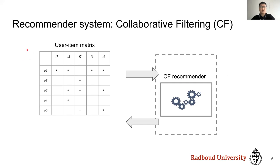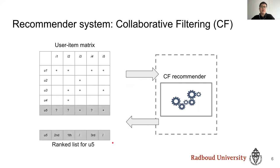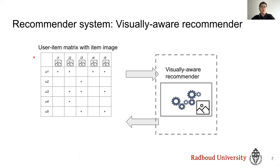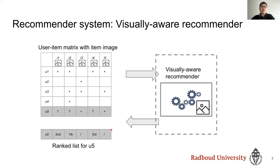Let's start with collaborative filtering. It is a method that makes automatic predictions about the interest of a user. Information about interactions of users with items is leveraged to build the system. This user-item matrix is used to train a collaborative filtering model, and for each user the system predicts a ranked list of items by relevance. With the development of deep learning, visual information can also be combined to improve recommendations. Item images can be leveraged together with the user-item matrix to provide personalized recommendations — such systems are called visually aware recommender systems.